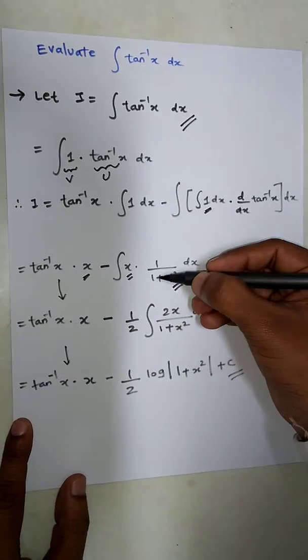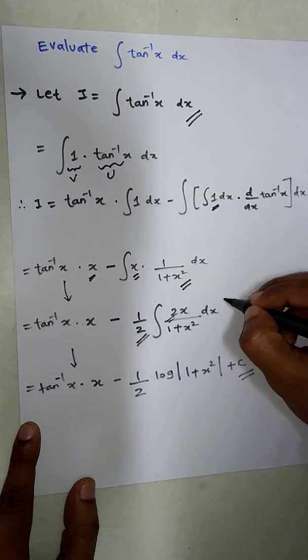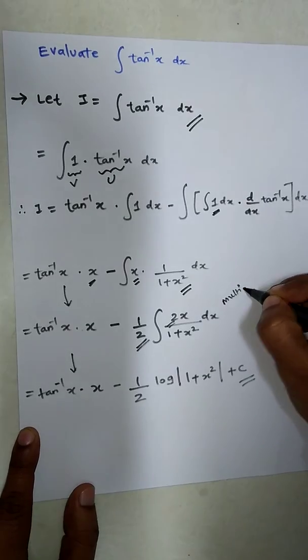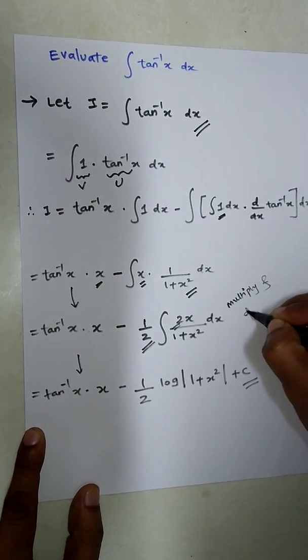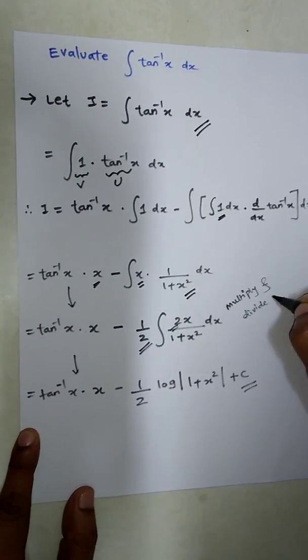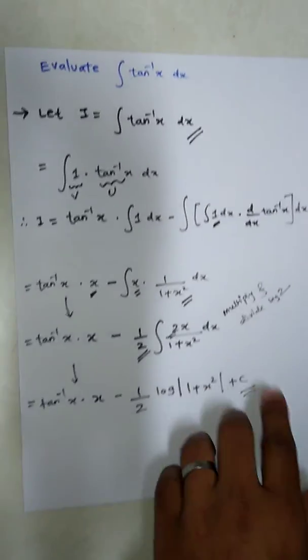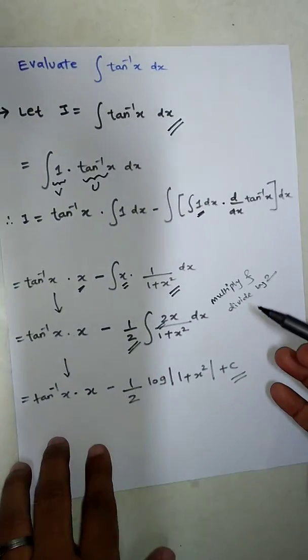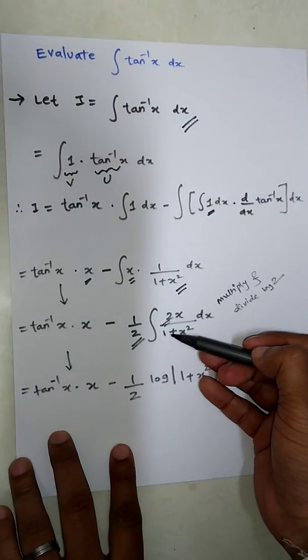For this side, multiply and divide by 2. So if you multiply and divide by 2, it will be like this so that we can use the denominator.